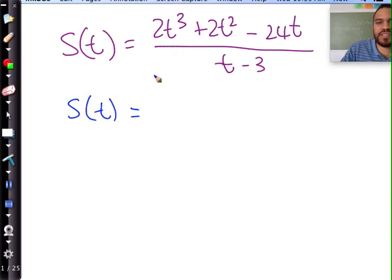So it's still S of T. Take 2t out and you get what? t squared plus t minus 12, all over t minus 3.